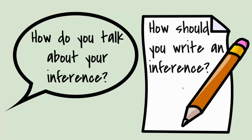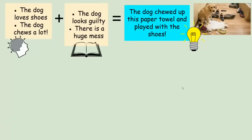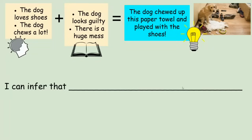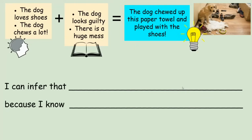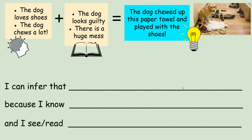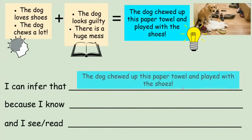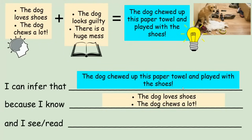So how do you talk about or write about an inference? We can use some sentence frames to help us. The first frame is: 'I can infer that blank because I know blank, and I see blank, or and I read blank.' In this case: I can infer that the dog chewed up this paper towel and played with the shoes, because I know the dog loves shoes and the dog chews a lot, and I see the dog looks guilty and there's a huge mess.